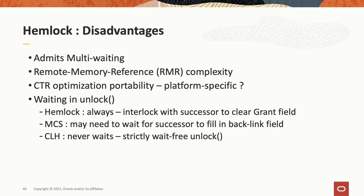What are the disadvantages to Hemlock? First and foremost, it admits multi-waiting, which we believe to be rare. But if multi-waiting does occur, we have high remote reference complexity which impinges on performance. Another question is whether the CTR optimization is portable or platform-specific. We also have waiting in the unlock operator — in Hemlock, a thread that has released a lock always waits for the successor to clear its grant field. In MCS, a thread in unlock may need to wait for the successor to fill in the backlink. In CLH, in contrast, the unlock operator is strictly wait-free.